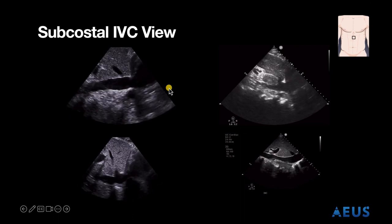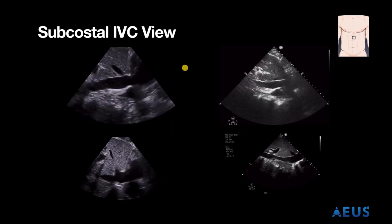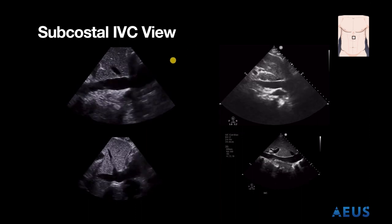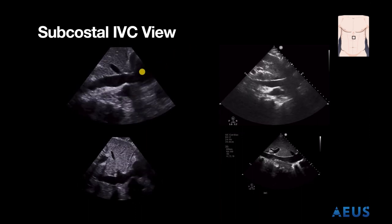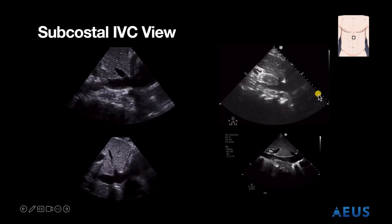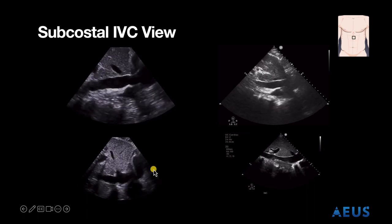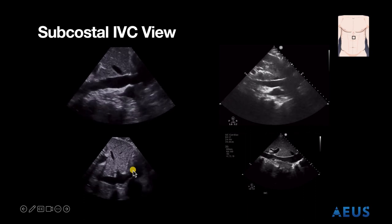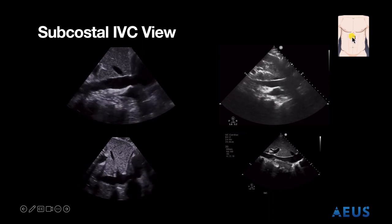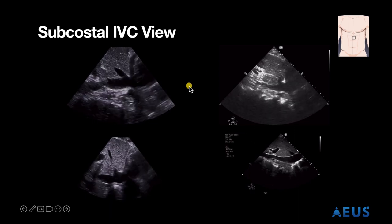Then we have our IVC view — the entrance, the last E of our 5Es protocol. This view is useful to assess how well venous return back to the heart is. You can see the IVC here draining into the right atrium. This view is obtained in a similar location as our subcostal view; however, the probe marker will be pointing towards the patient's head.